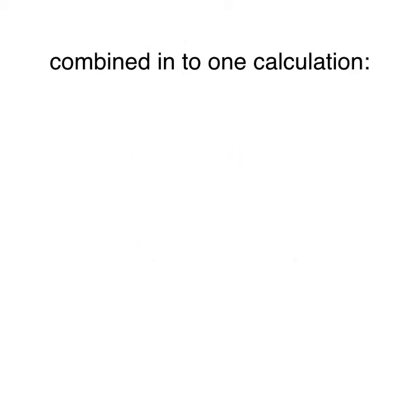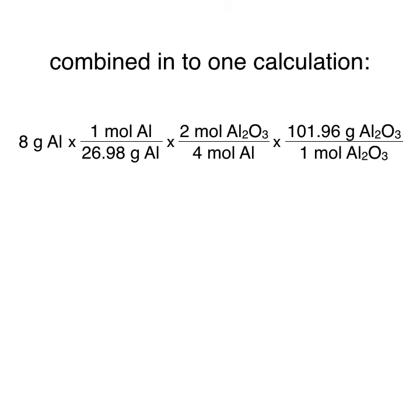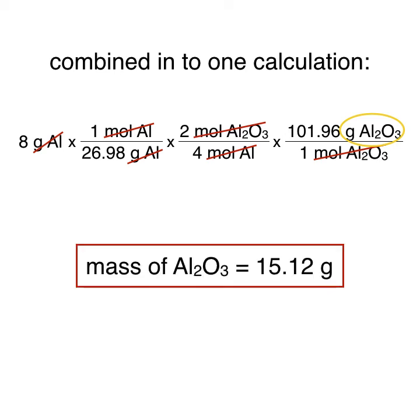As a quick note, all the steps we just performed can be combined into a single calculation. To do this, you simply write all the ratios we multiplied in one line. Starting with our mass of aluminum, we can see the grams of aluminum cancel out, followed by the moles of aluminum, and finally the moles of aluminum oxide. You must always make sure that your desired unit is in your numerator of your final ratio. Once again, multiplying these ratios gives us a mass of aluminum oxide of 15.12 grams.